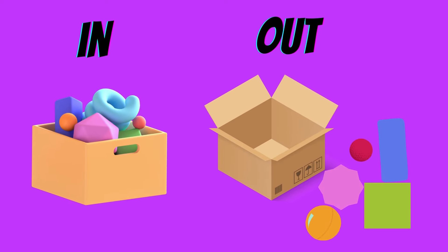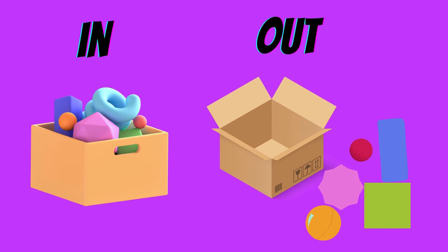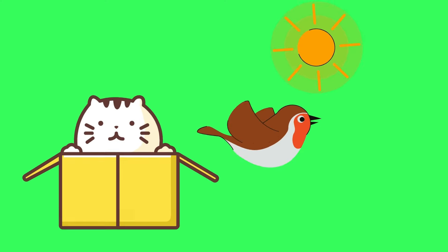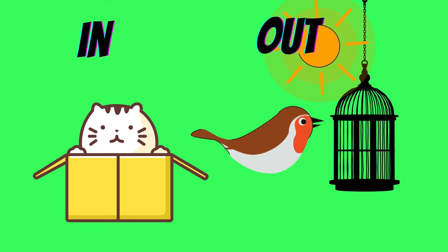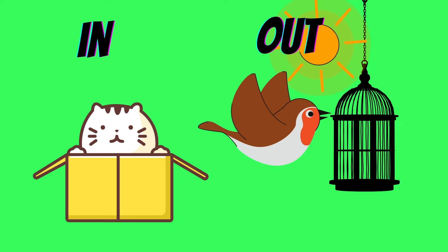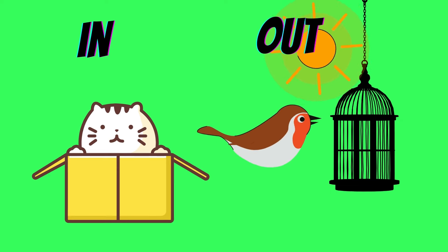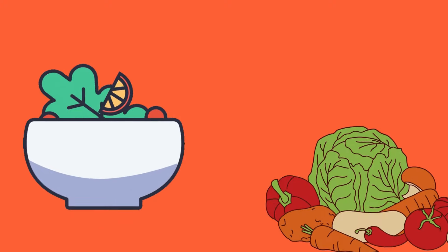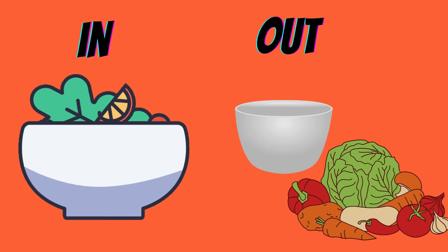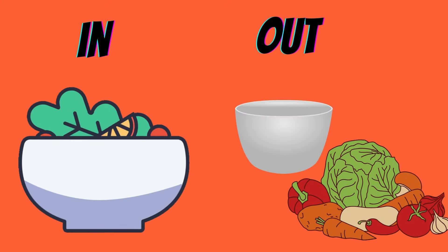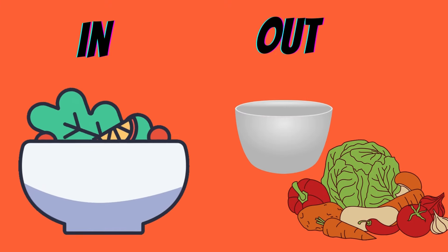Toys are inside the box but toys are outside of the box. Cat is inside the box but bird is flying outside of the cage. Vegetables are in the bowl and vegetables are out of the bowl.